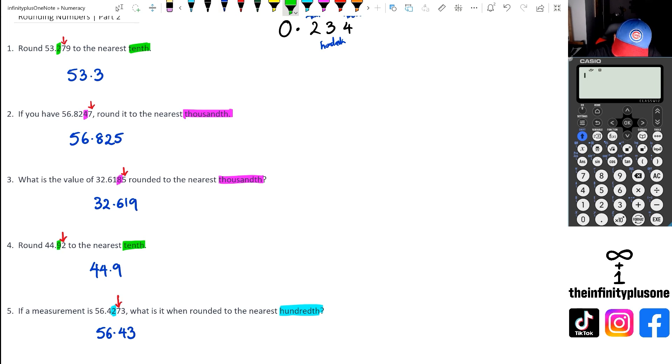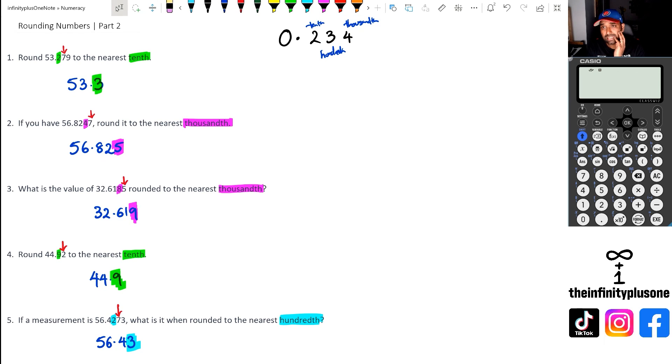So as you would have noticed, this is the tenths column, this is the thousandths column, thousandths column, another tenths column, and then a hundredths column. I've actually rounded the numbers up to the nearest whatever the question asked. That's just a really quick intro into rounding numbers, especially when dealing with tenths, thousandths, hundredths and so on.